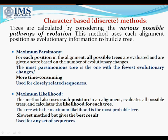In the maximum parsimony method, for each position in the alignment, all possible trees are evaluated and given a score based on the number of evolutionary changes needed to produce the observed sequence changes. The most parsimonious tree is the one with the fewest evolutionary changes for all sequences to derive from a common ancestor. This is a more time-consuming method and is used for closely related sequences.